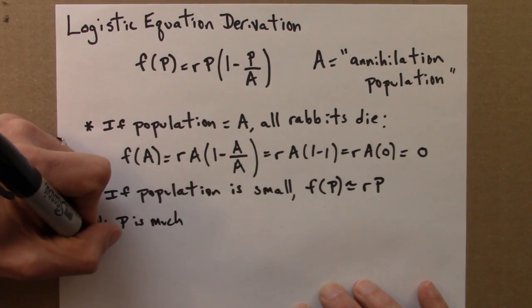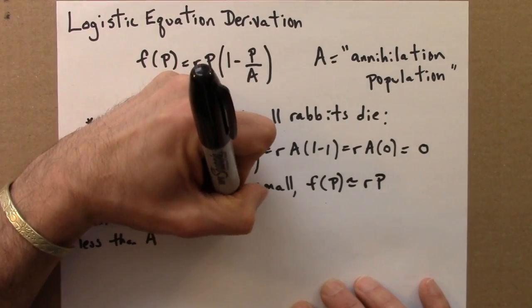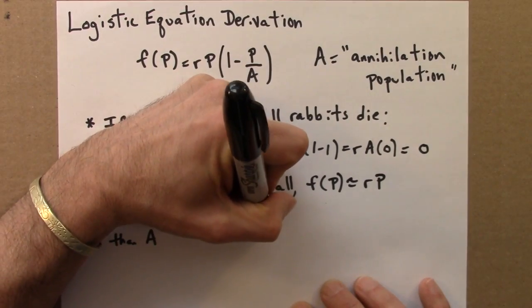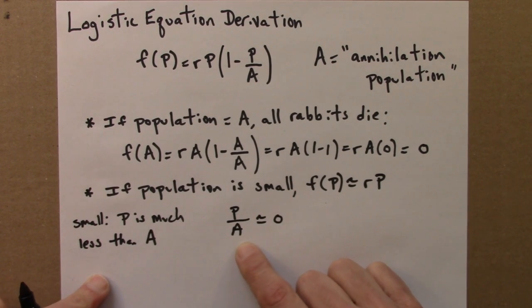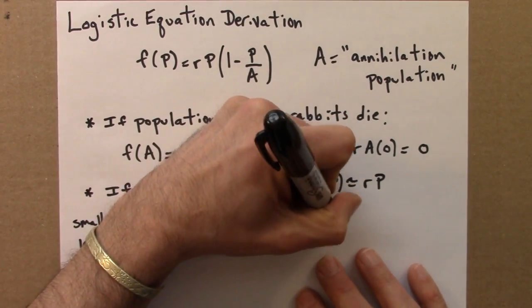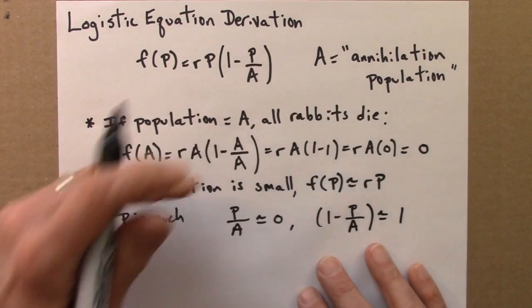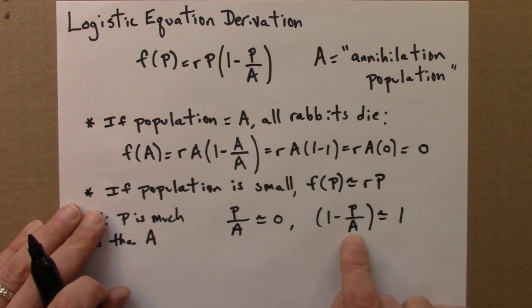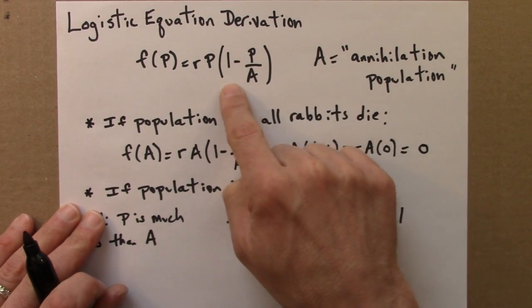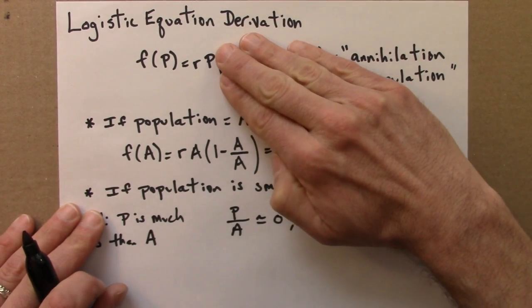p is much less than a. And if that's the case, p over a is approximately 0. So maybe a is 10,000. 10,000 rabbits is the apocalypse number. And p might be 10 or 20. 10 or 20 over 10,000 is a very small number. It's close to 0. When that's the case, p over a is close to 0.